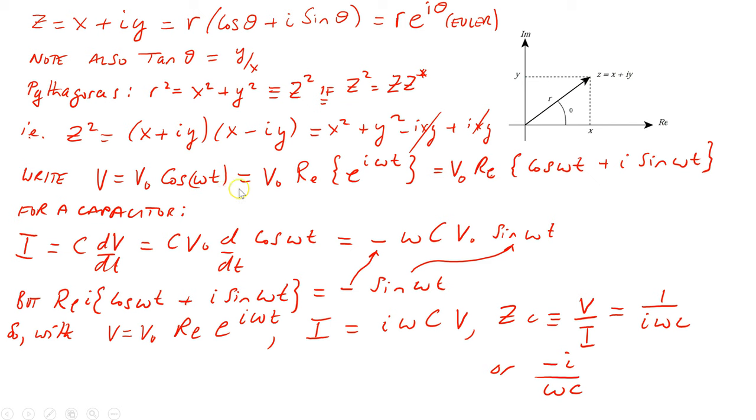Armed with this refresher on complex numbers, we can take a look at the math for capacitors. Recall that the current through a capacitor (big I here) is the capacitance in farads times the rate of change of voltage in volts per second. So I = C dv/dt.